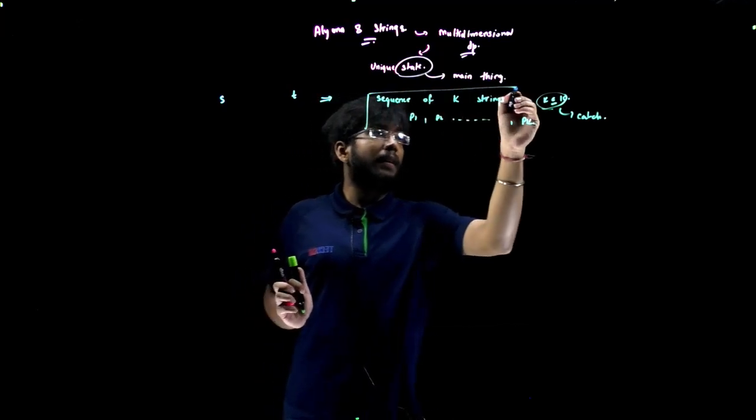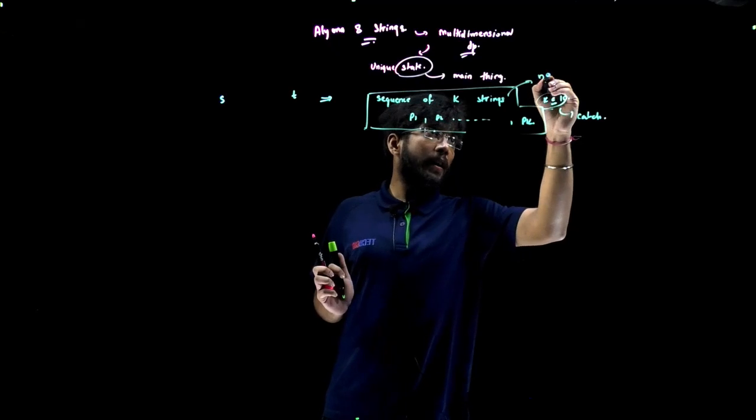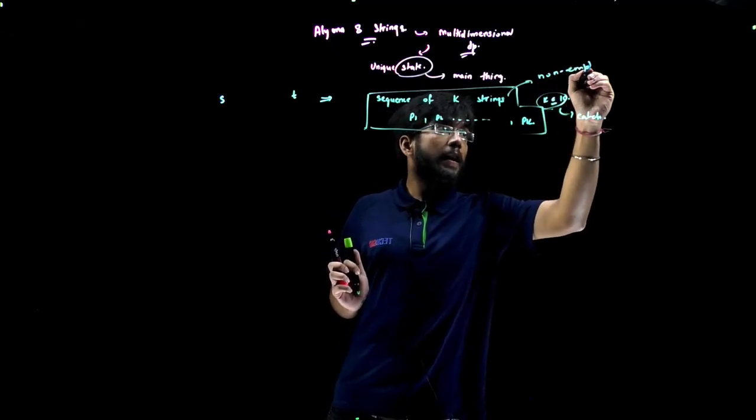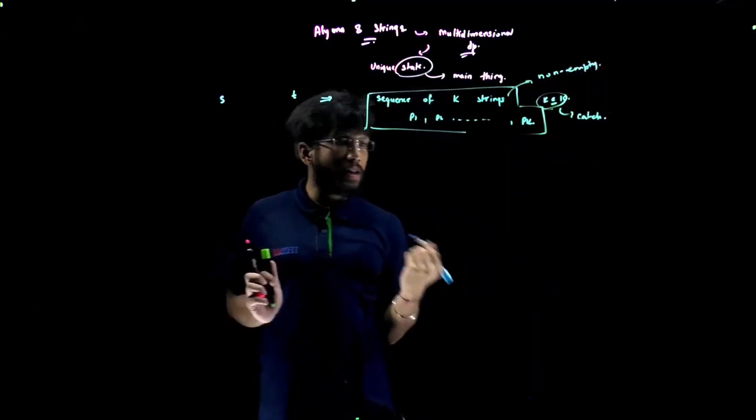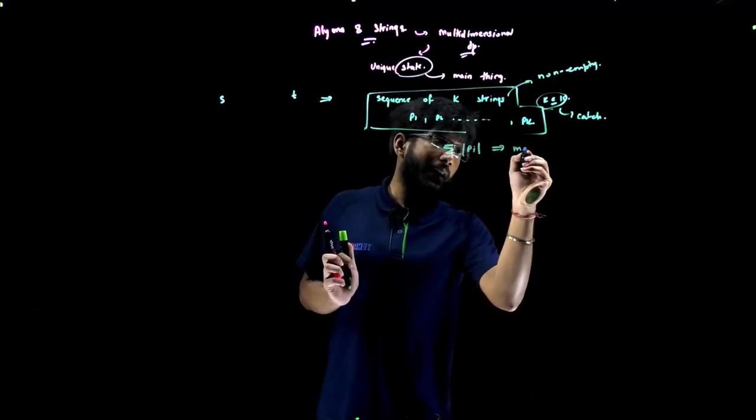The task of Alyona is to find out a sequence of k strings and these strings should be non-empty, and the condition is that the summation of the lengths of pi should be maximum.